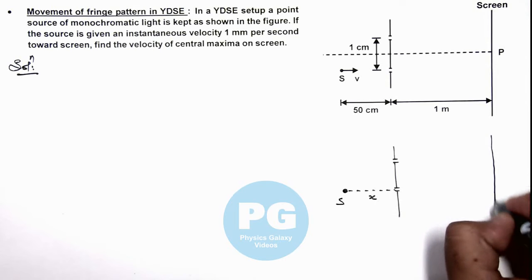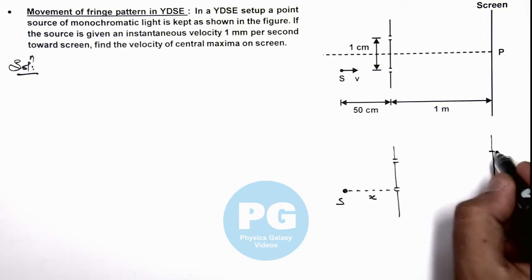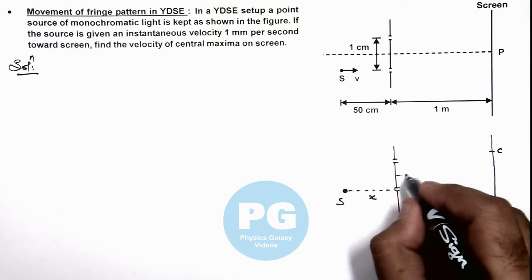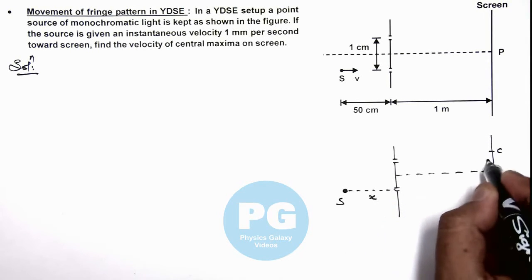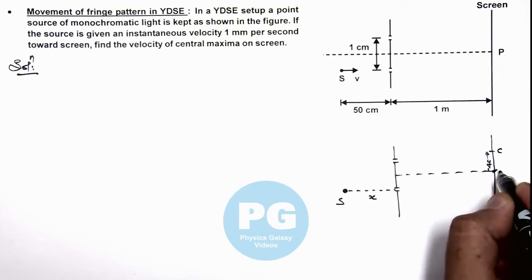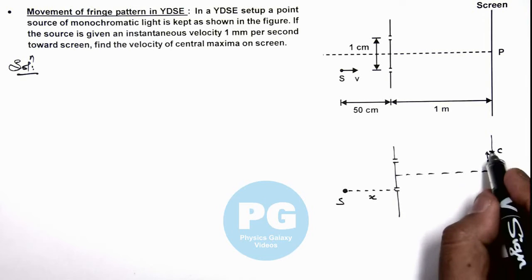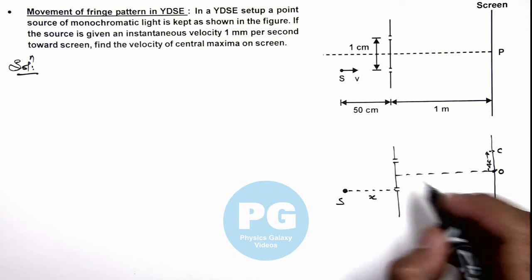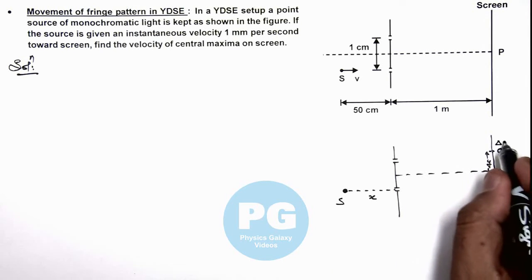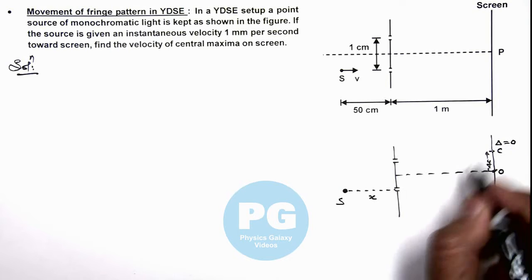And on screen, this is the position of central maxima, which is located at a distance y from the center of screen, which is O. Now at this point, if this is the central maxima, then at this point net path difference must be zero for the two waves reaching this point from the two slits.